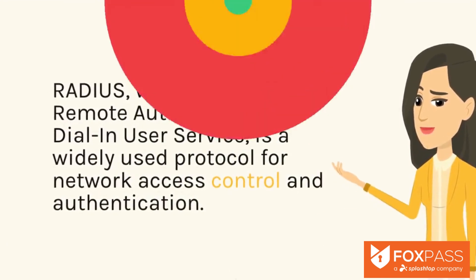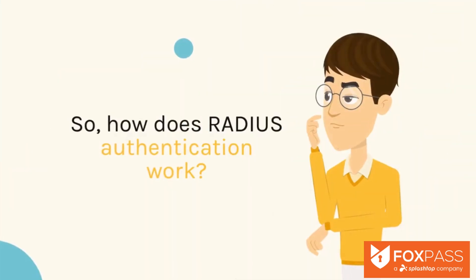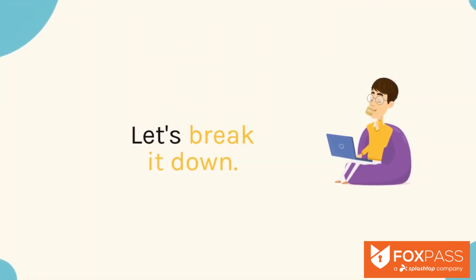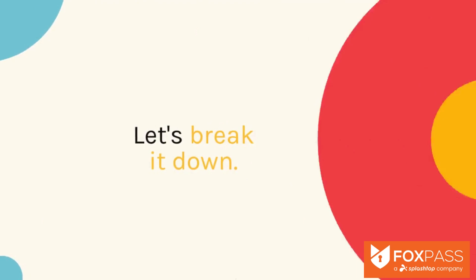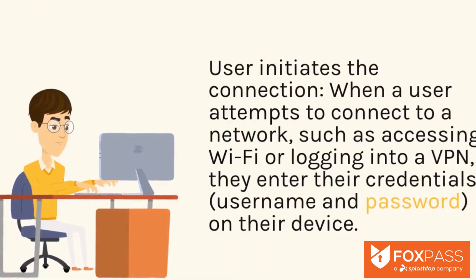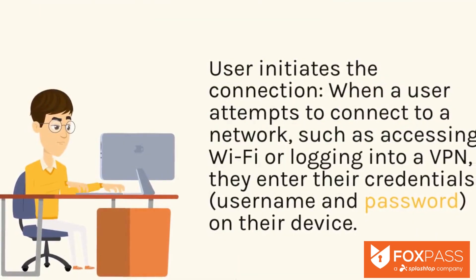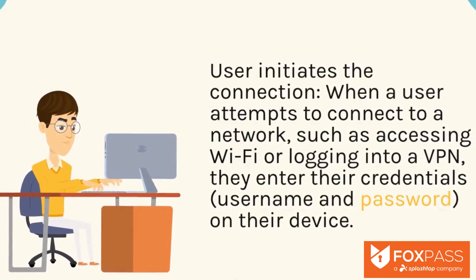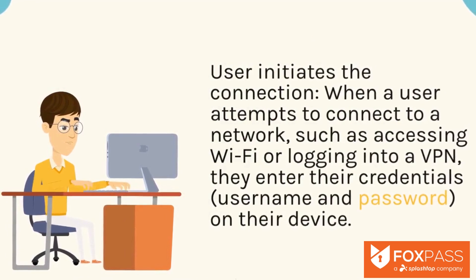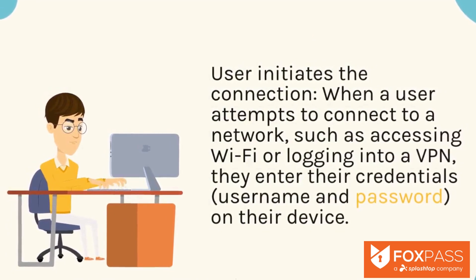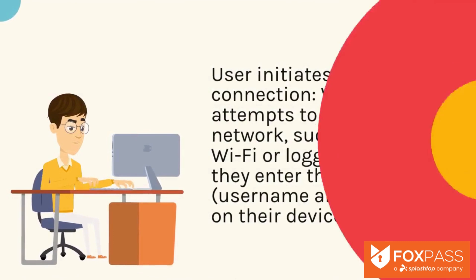So how does RADIUS authentication work? Let's break it down. Step 1: User initiates the connection. When a user attempts to connect to a network, such as accessing Wi-Fi or logging into a VPN, they enter their credentials — username and password — on their device.